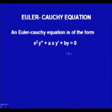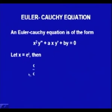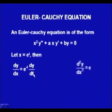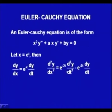We can change this equation to a linear differential equation with constant coefficients using a certain substitution in the variable x. Let x = e^t, then dy/dx = e^{-t} dy/dt.